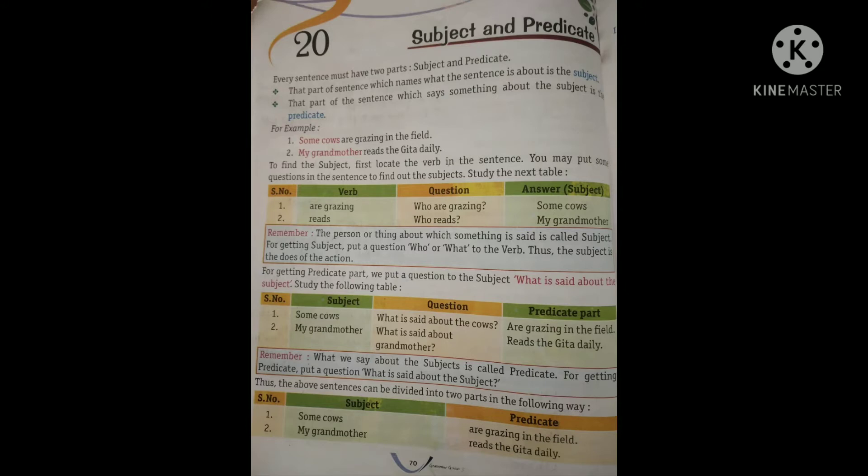Same way, my grandmother. My grandmother reads the Gita daily. Sentence kiske baare mein hai? Grandmother ke baare mein. Toh my grandmother hua subject, or reads the Gita daily hua predicate.